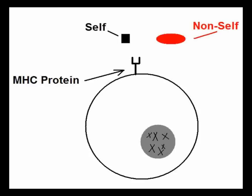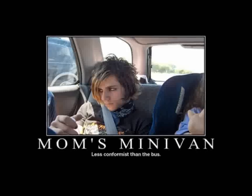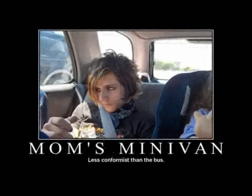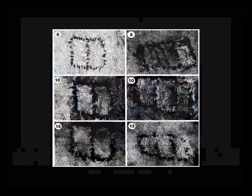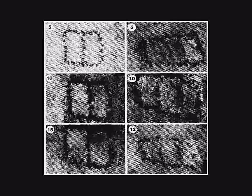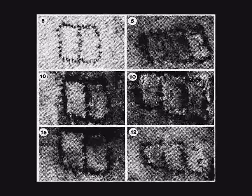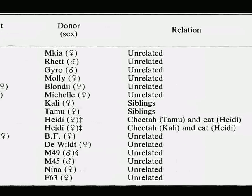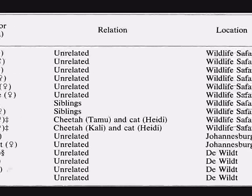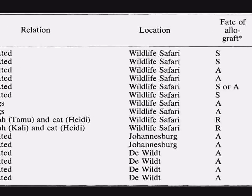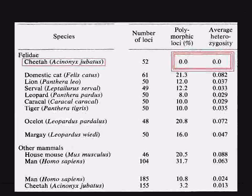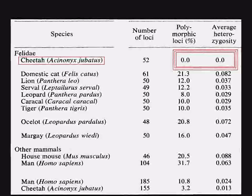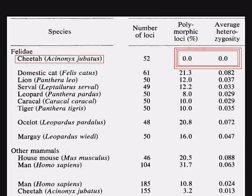One specific area in which the cheetah has very low genetic variability is in its MHC proteins — the proteins on cell surfaces which determine whether a skin graft or organ transplant is rejected or accepted. To assess this lack of genetic variability, this particular study took 14 skin grafts — 12 of which were from completely unrelated animals — and transplanted skin from one cheetah to another. Absolutely zero of the 14 were rejected during the rapid rejection stage, which means the donor and recipient cheetahs' MHC loci were essentially identical. This is extremely indicative of low genetic variability — the cheetah is essentially genetically bankrupt.